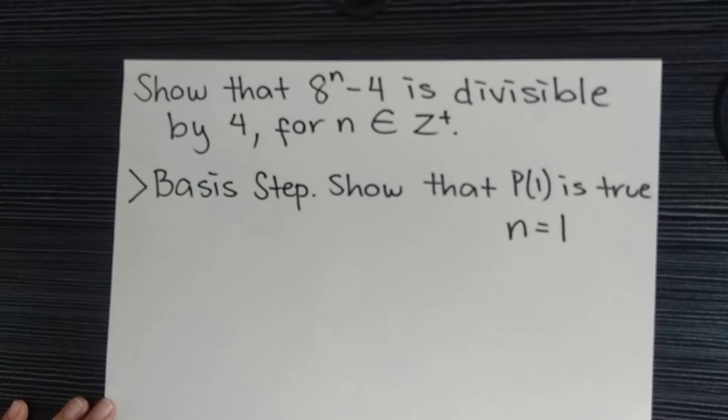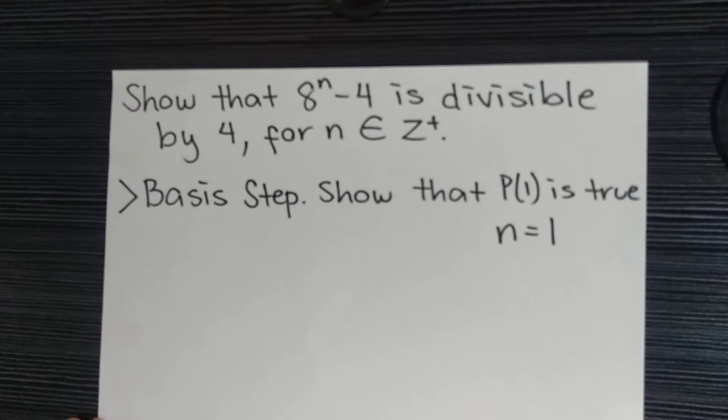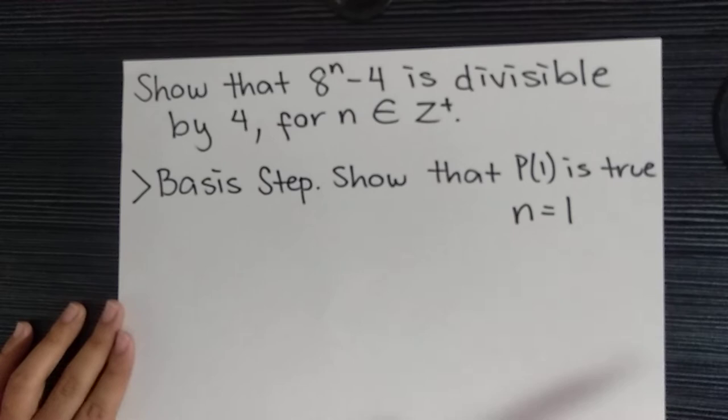Today, we must show that 8^n - 4 is divisible by 4, for n ∈ Z+, all positive integers. To do that, we have to use mathematical induction.